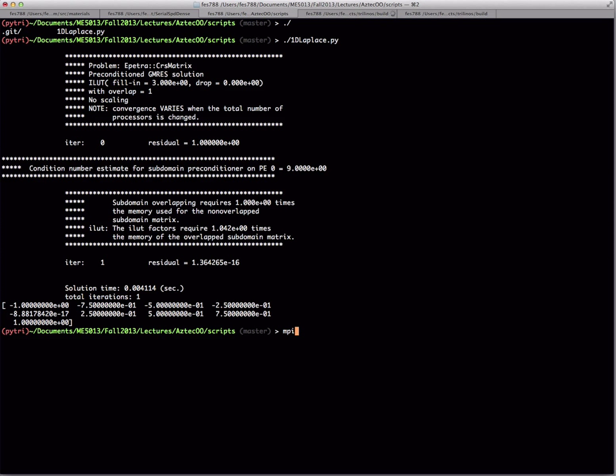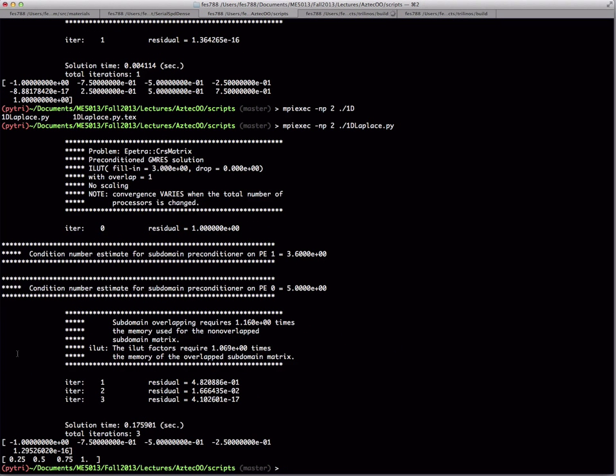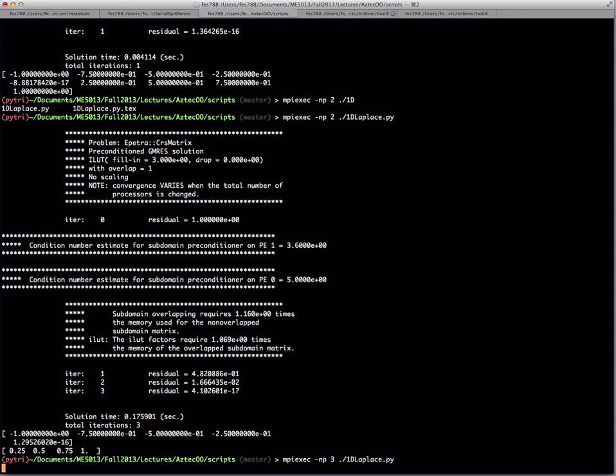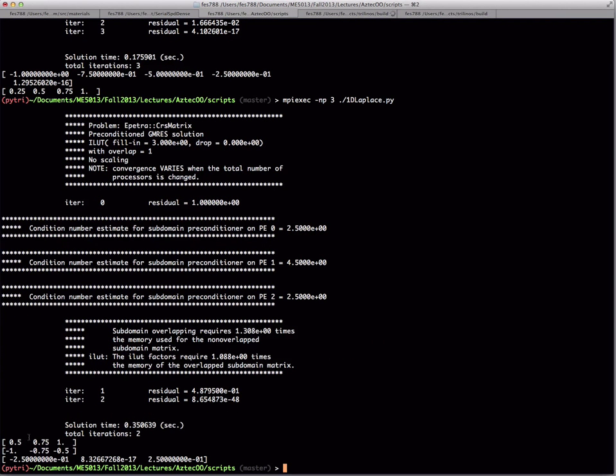So we could also, because this is a parallel code, run this on multiple processors. Okay, so there, now you see that the problem has been partitioned across the processors as evenly as possible. So we had nine nodes, so we get four on one processor and three on the other. But you can see that the range of the solution is from minus 1 to 1 again. And of course, we could run this on three processors as well.